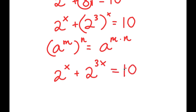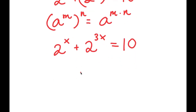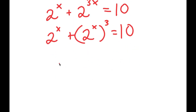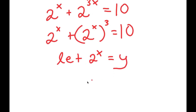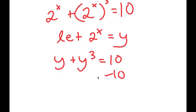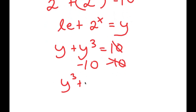And now this is equal to 10. I can rewrite this as 2 to the power of x plus 2 to the power of x to the power of 3 equals 10. I'm going to let 2 to the power of x equal to the variable y. So I get y plus y to the power of 3 is equal to 10. If I subtract 10 on both sides, these two cancel out and I get y to the power of 3 plus y minus 10 is equal to 0.